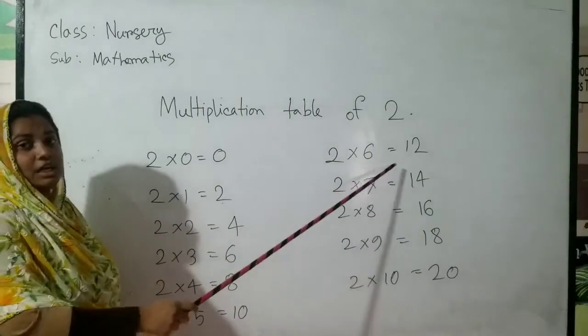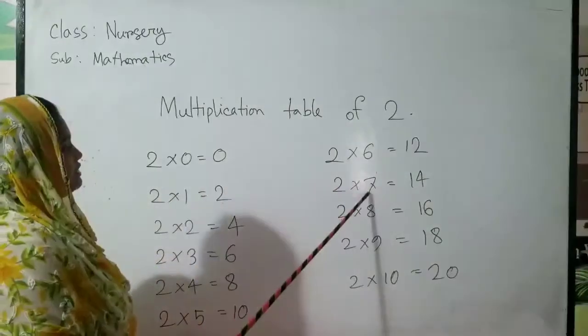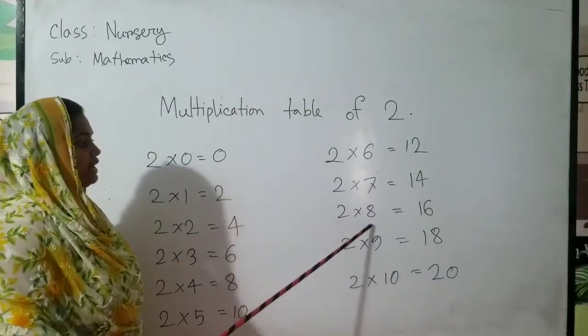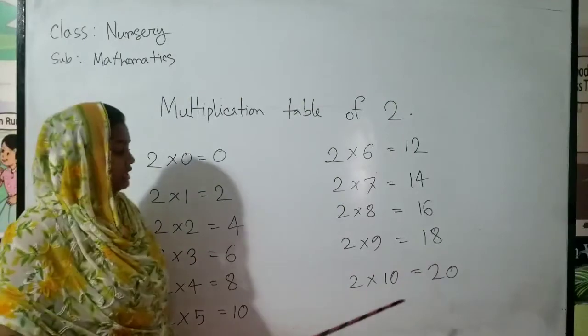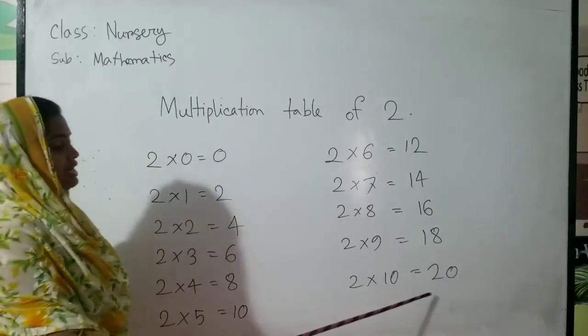Two sixes are twelve, two sevens are fourteen. Two eights are sixteen. Two nines are eighteen. And two tens are twenty.